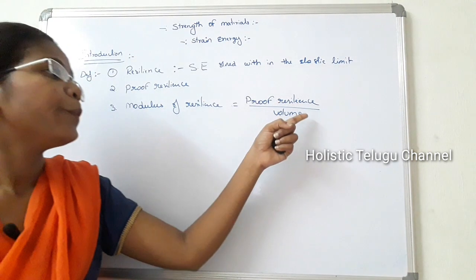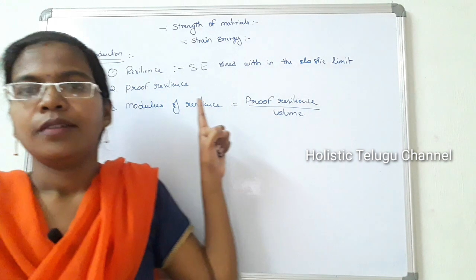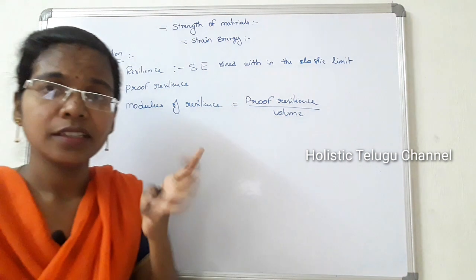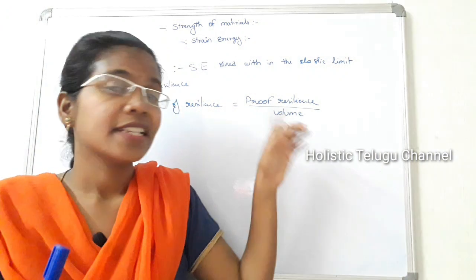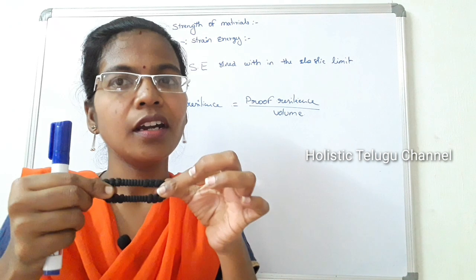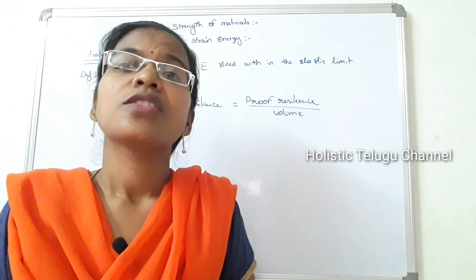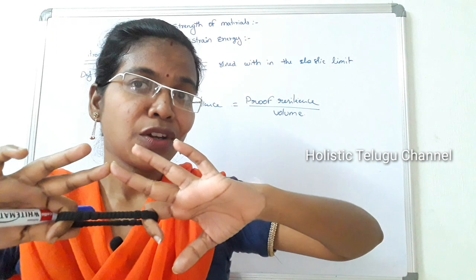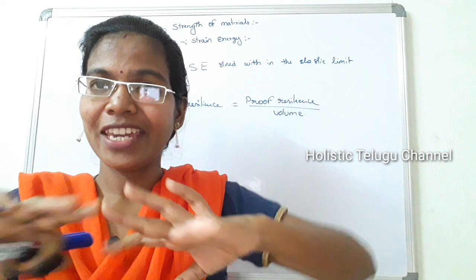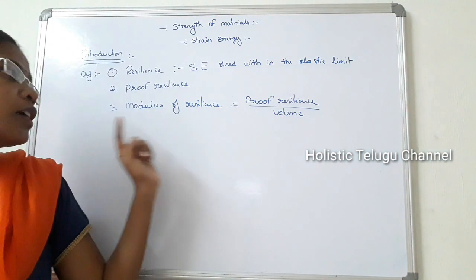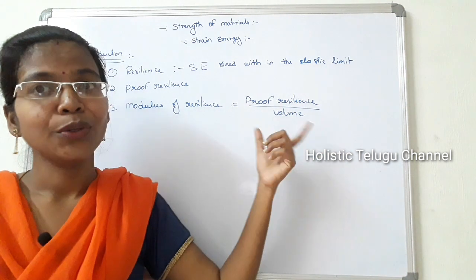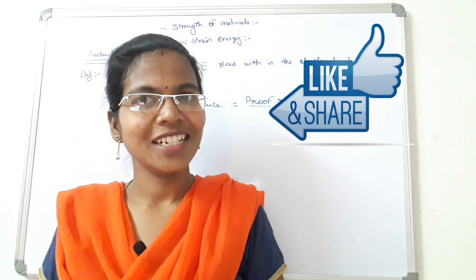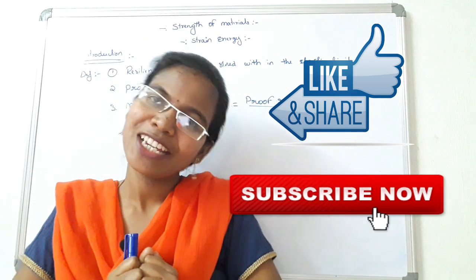Proof Resilience per unit volume of a body is called Modulus of Resilience. So: Resilience is strain energy stored within the elastic limit. Proof Resilience is the maximum strain energy stored within the elastic limit without any plastic deformation. Modulus of Resilience is Proof Resilience per unit volume of a body. If you like this video, please share and subscribe to the channel. Thank you for watching.